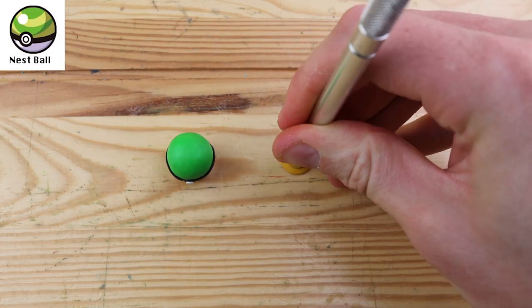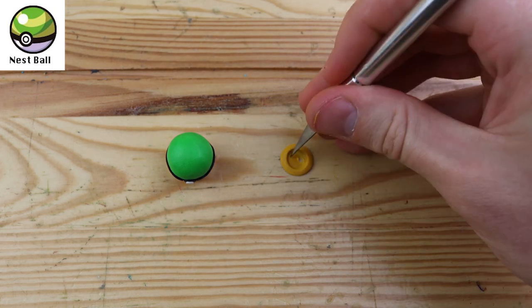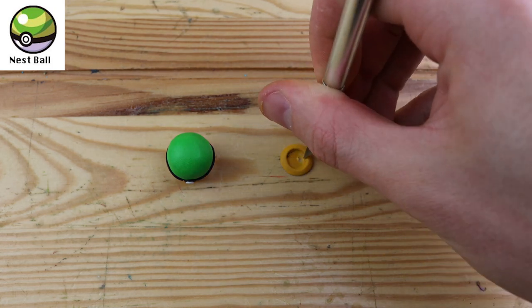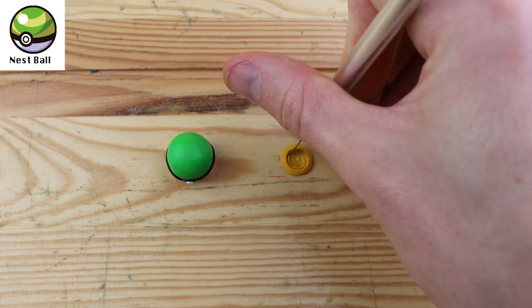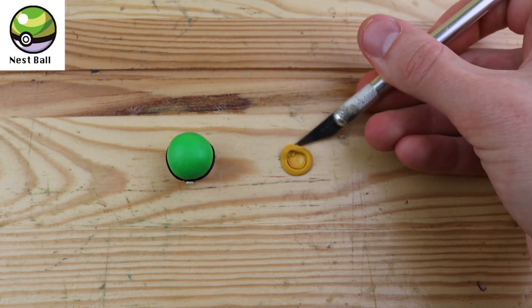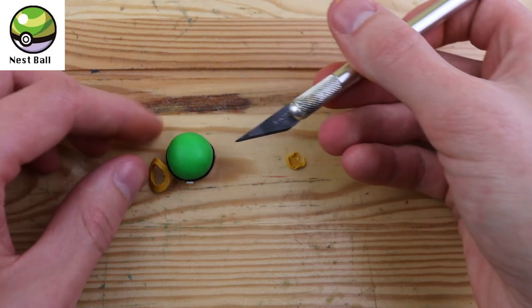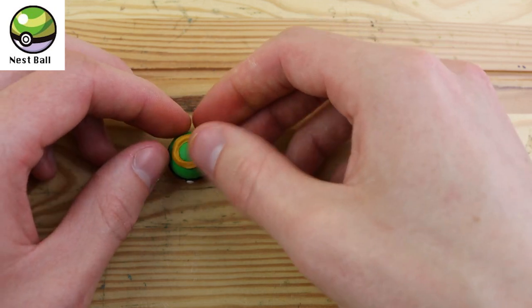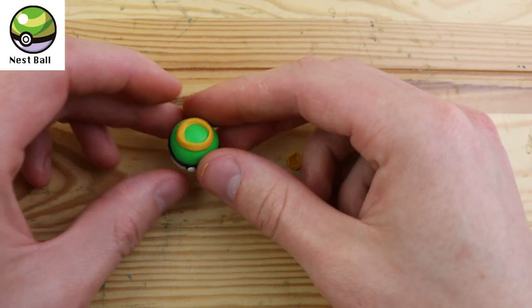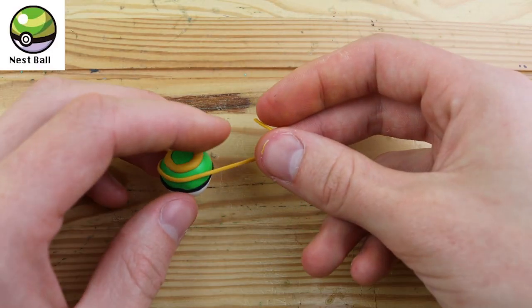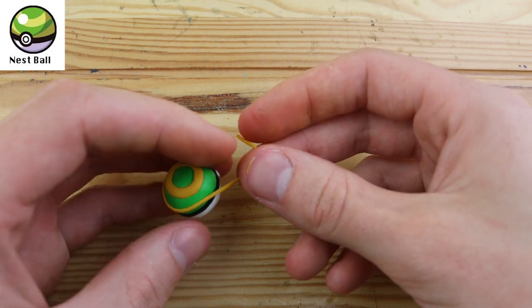This one seemed to give me a lot of trouble, and it was mostly this ring on the top. I tried a few different methods of making it, but I think this one works the best. The special ability of this pokeball is that it's more likely to succeed against lower level pokemon. We have this yellow wrapping around the bottom as well.